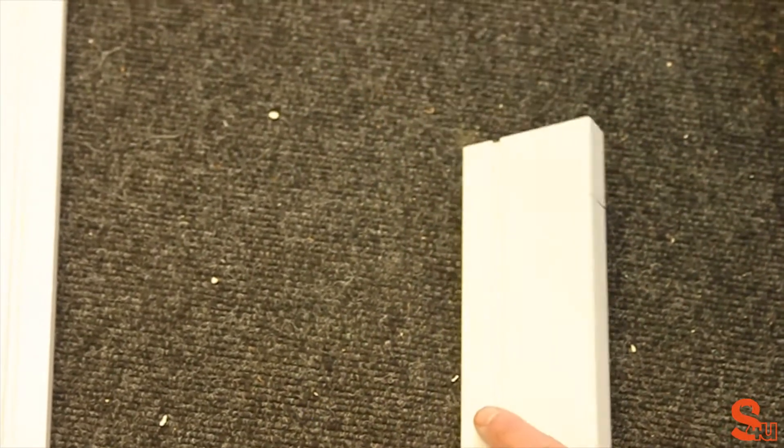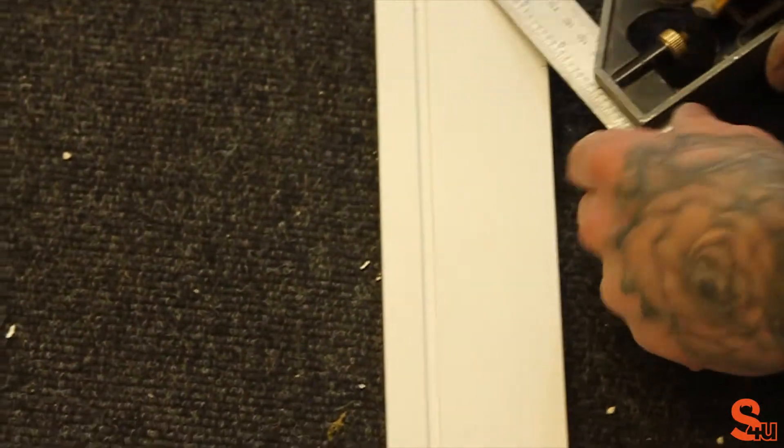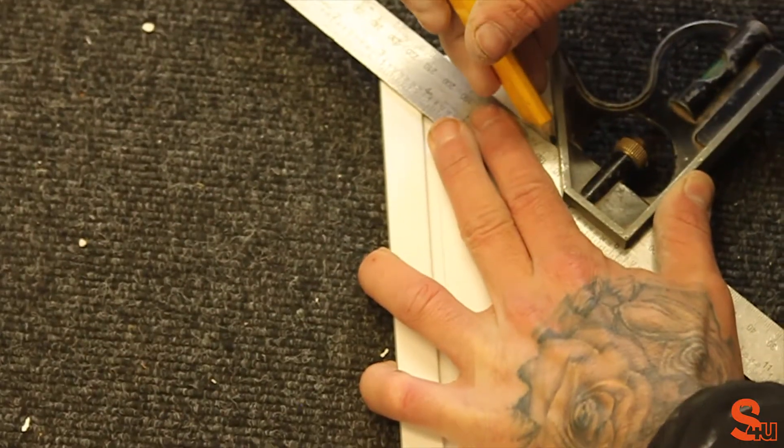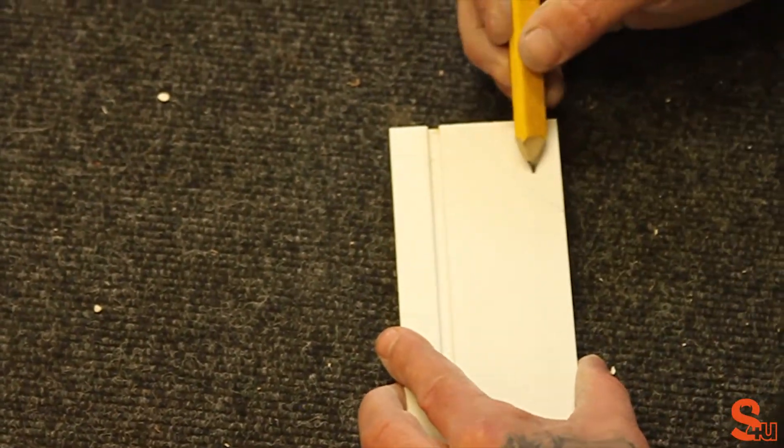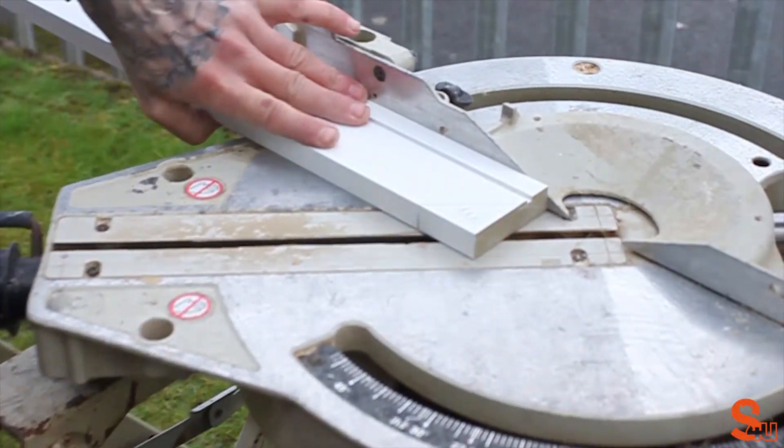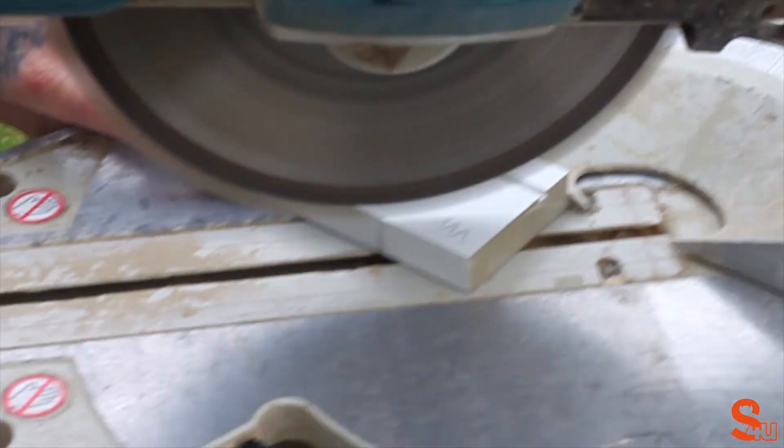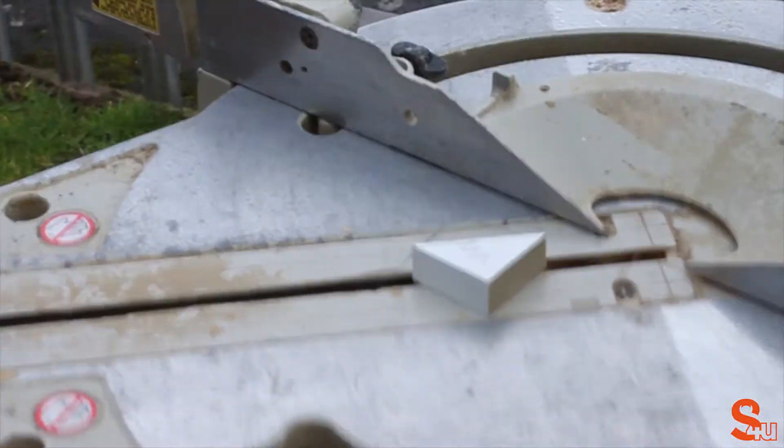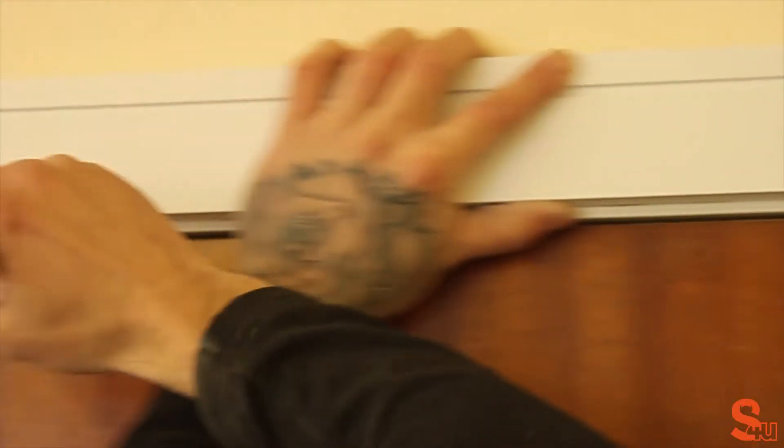Using the set square, mark which part we need to cut off. So that scribble shows the bit we want to cut. Place it back on the miter saw, still set to 45 degrees, and chop off that extra bit. So that should show us that part is done. Now we need to do the other side.